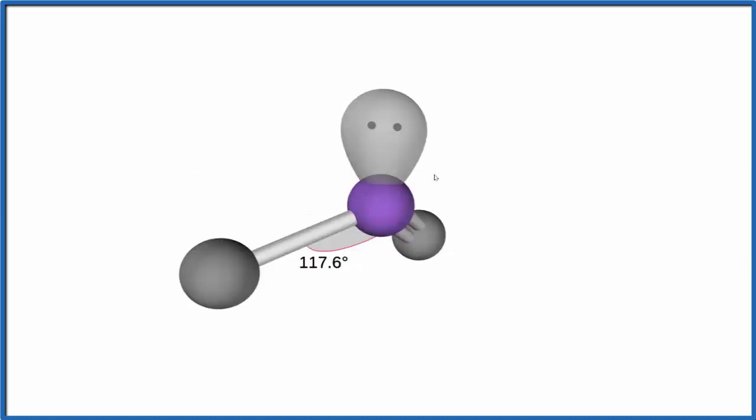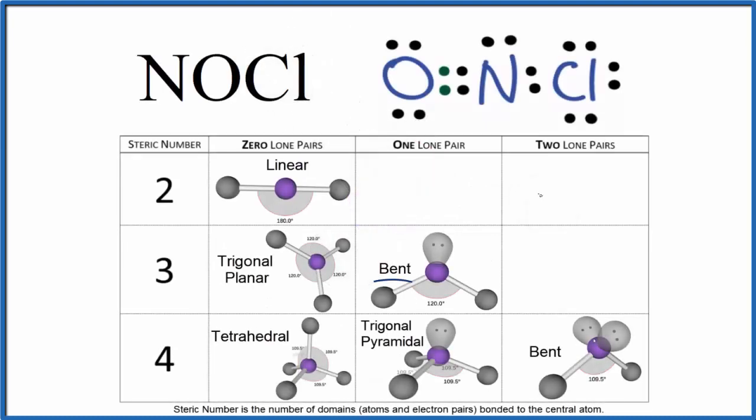Let's go back to our Lewis structure. Finally we can use the AXE notation to figure out the molecular geometry or shape for NOCl. So A, that's the central atom, that's the nitrogen. X is the number of atoms attached. We have one, two, and then E, that's the number of lone pairs. We have one lone pair here on the nitrogen. That means we have AX2E. If you look that up you'll find out that is a bent molecular geometry.